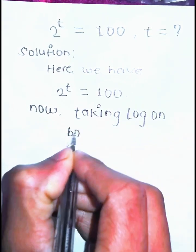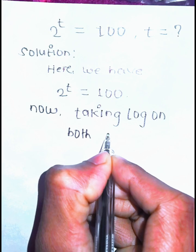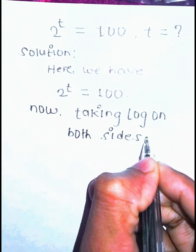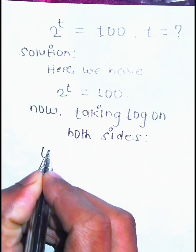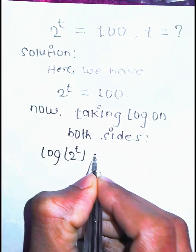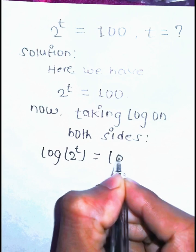So let's take log on both sides. After taking log on both sides, we get log(2^t) = log(100).